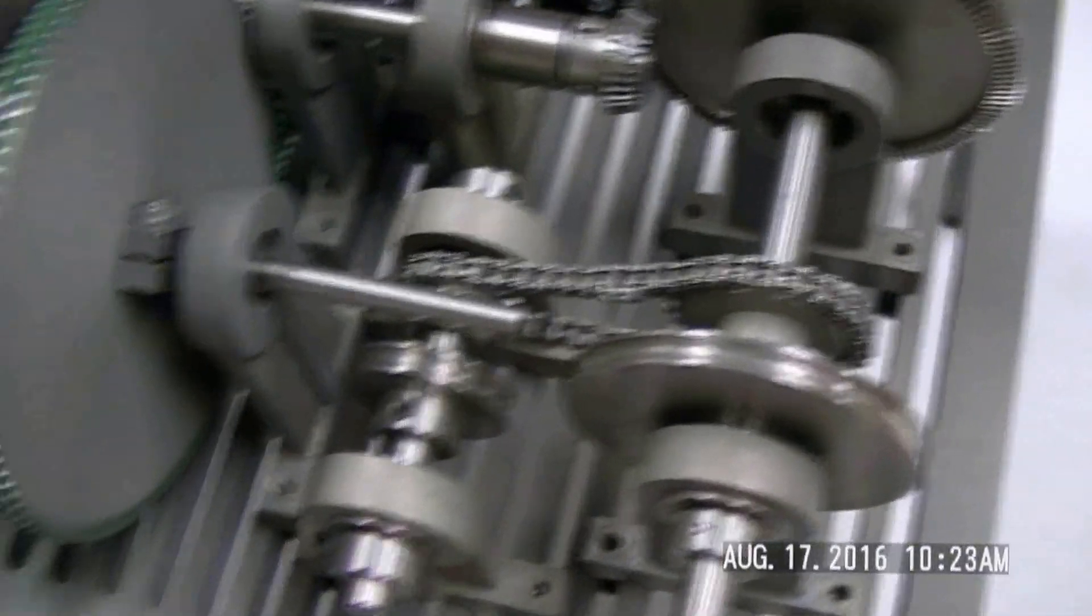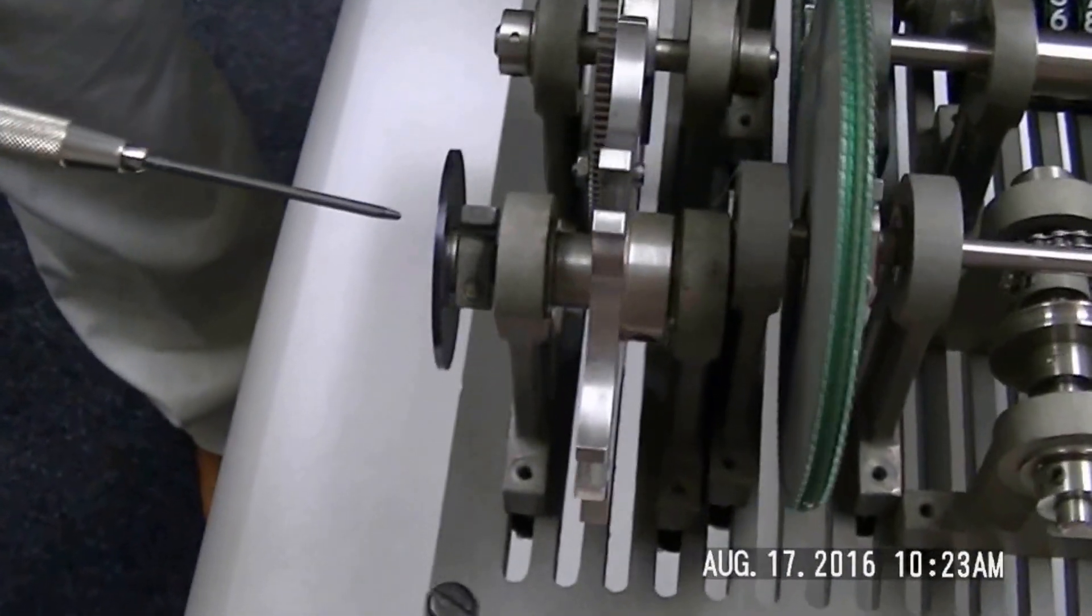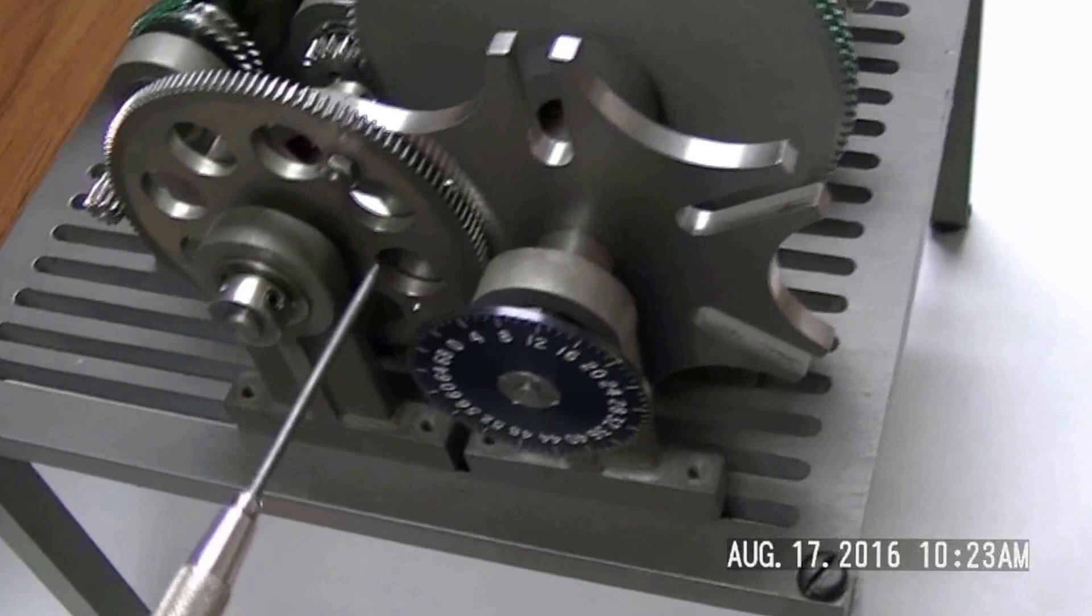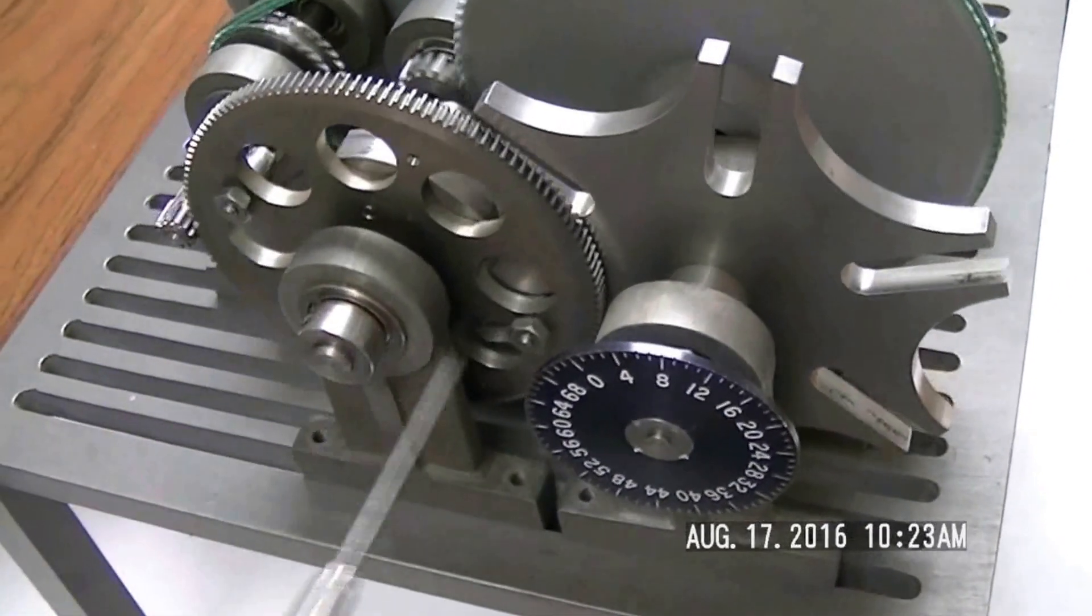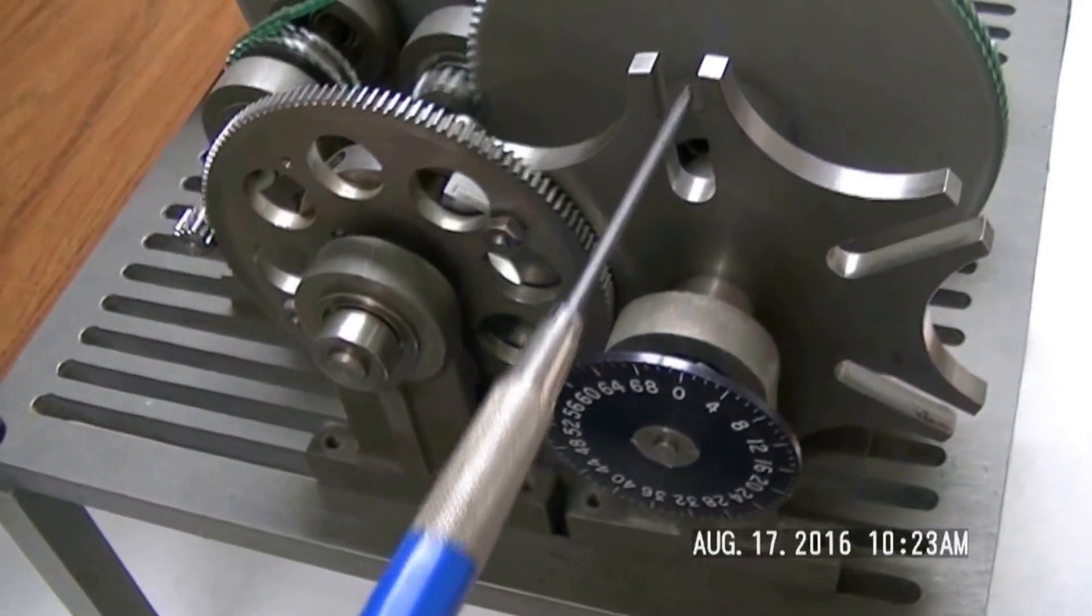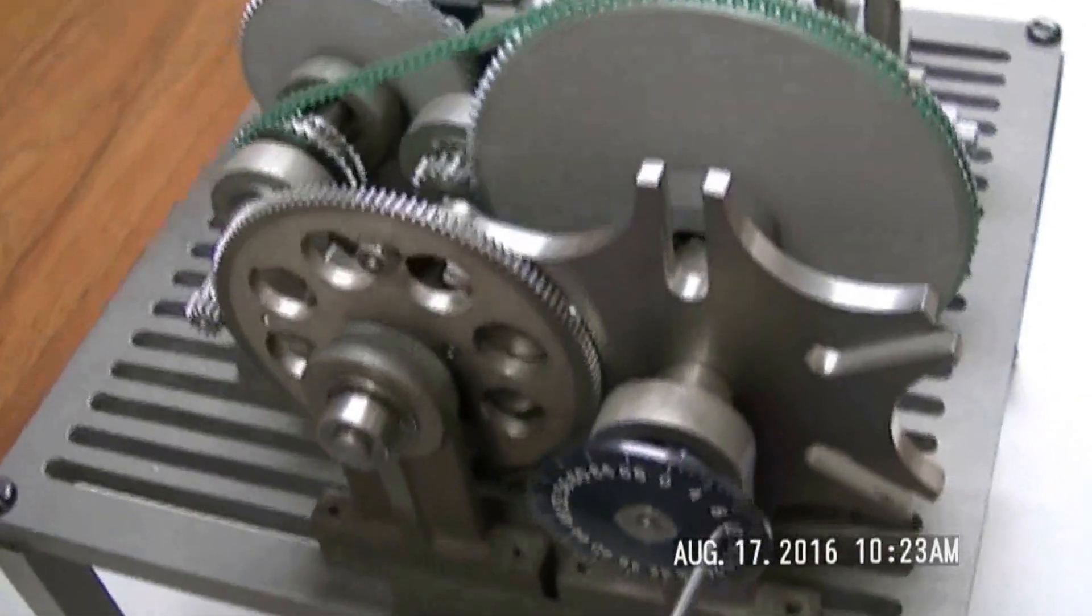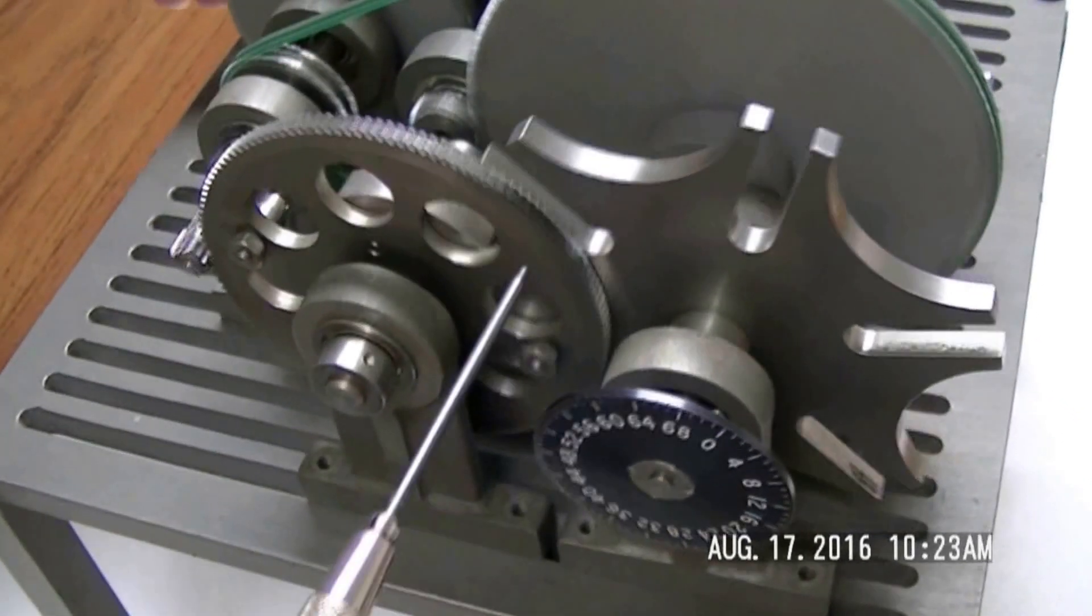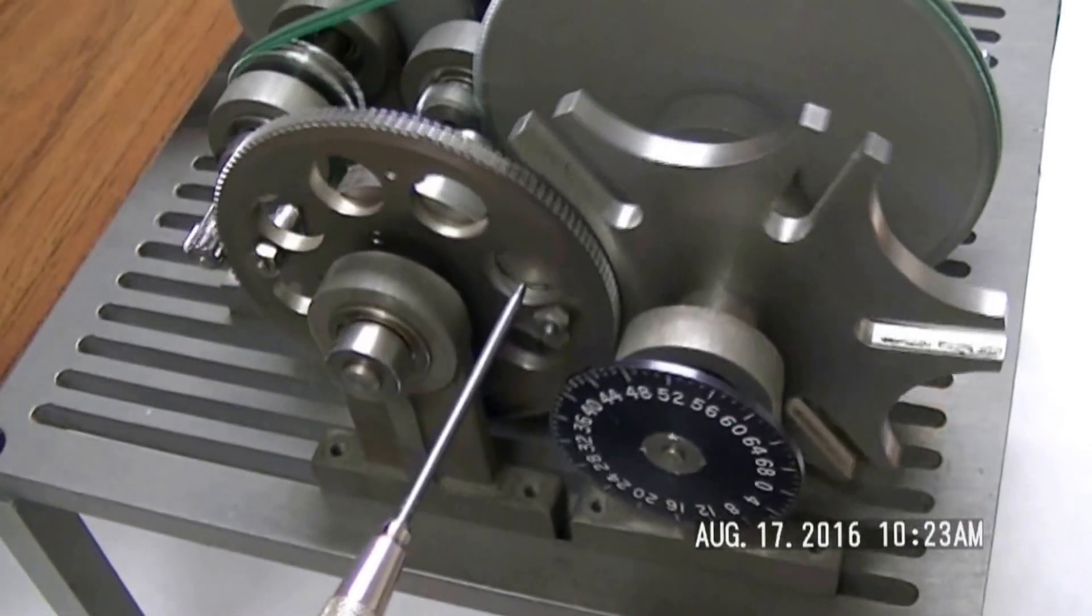Moving on to this side, this is what we call a Geneva mechanism. This is sort of an intermittent motion type setup. So as I rotate this shaft here, the indexing key comes around, engages one of the slots here, and rotates this one increment. In this case, an increment is, I think, 60 degrees. It's a pretty neat device here, and relatively simple.